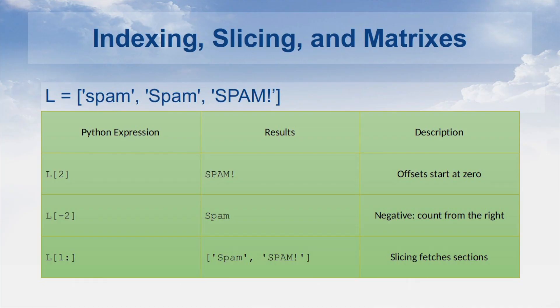Let us look at indexing and slicing. Because lists are sequences, indexing and slicing work the same way for lists as they do for strings. In this table, for an example I have created a list with three items: 'spam', 'Spam', 'SPAM' — the same word but the first item is all lowercase, the second has the first letter capitalized, and the third is all capitals — to illustrate the indexing and slicing operations.